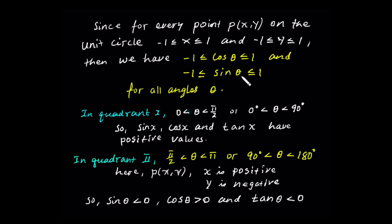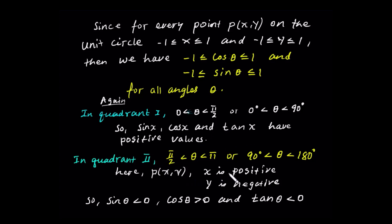So cos theta is x, and therefore negative 1 is less than or equal to cos theta, and cos theta is less than or equal to 1 — so the cosine value is between negative 1 and positive 1. Now the sine value is between negative 1 and positive 1. In quadrant 1, a point P with coordinates x, y — both are positive. 0 is less than or equal to theta, theta is less than or equal to pi over 2. In quadrant 2, the point P has x negative and y positive.